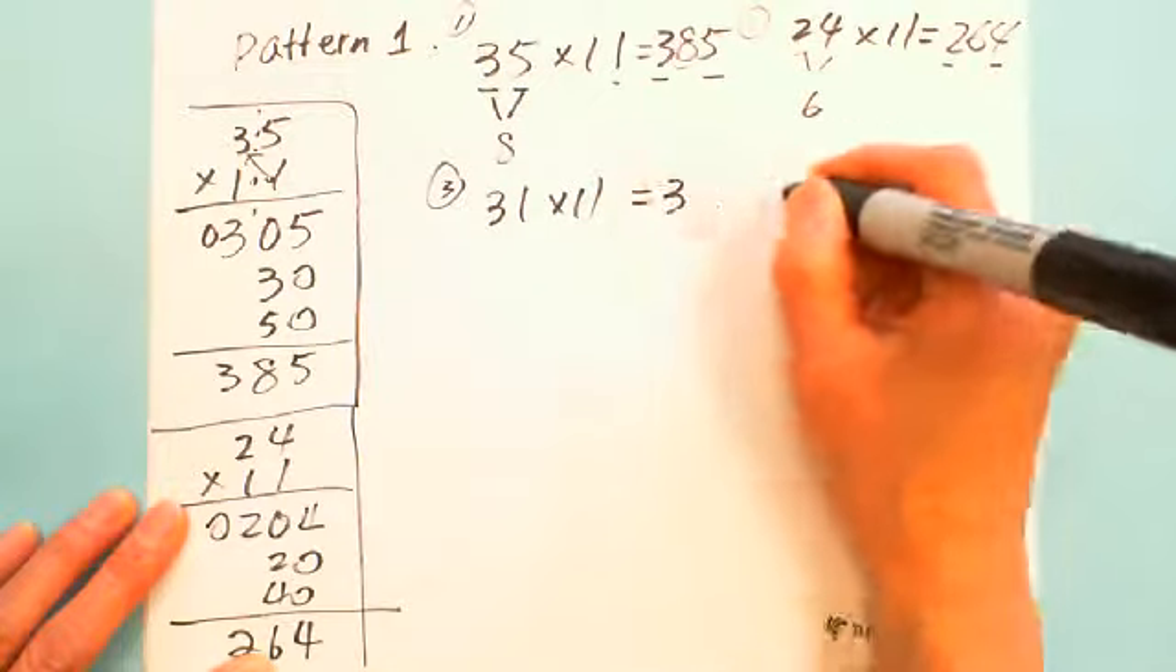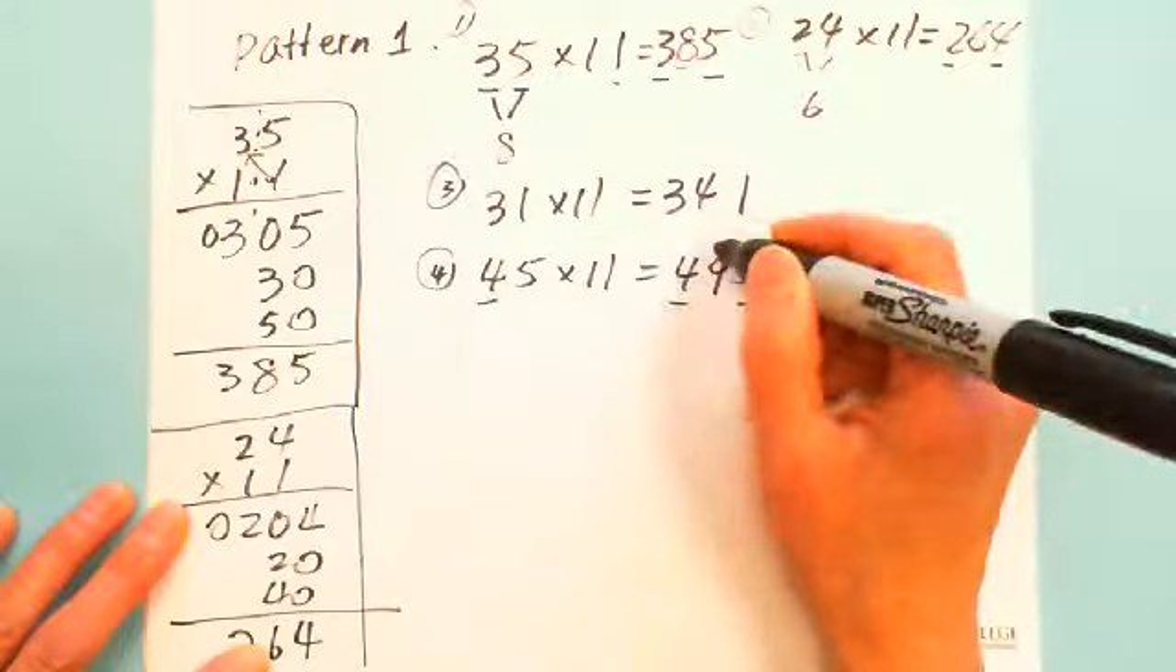Let's say if you have 31 multiplied by 11, the first digit is 3, the last digit is 1. The middle digit adds 3 with 1 is 341. Let's say if you have 45, the first digit is 4, the last digit is 5. The middle digit is 4 plus 5, you got 9, which is 495.